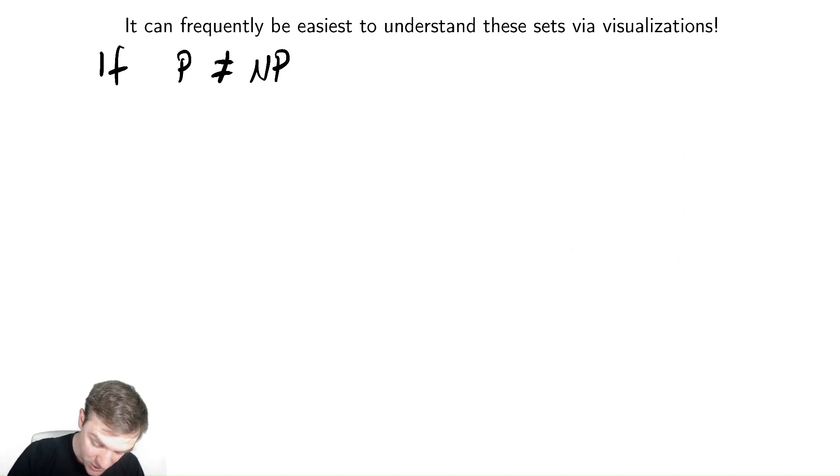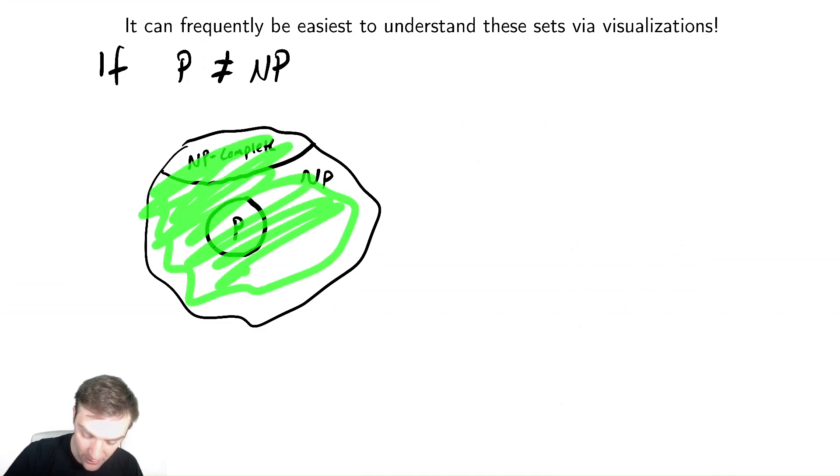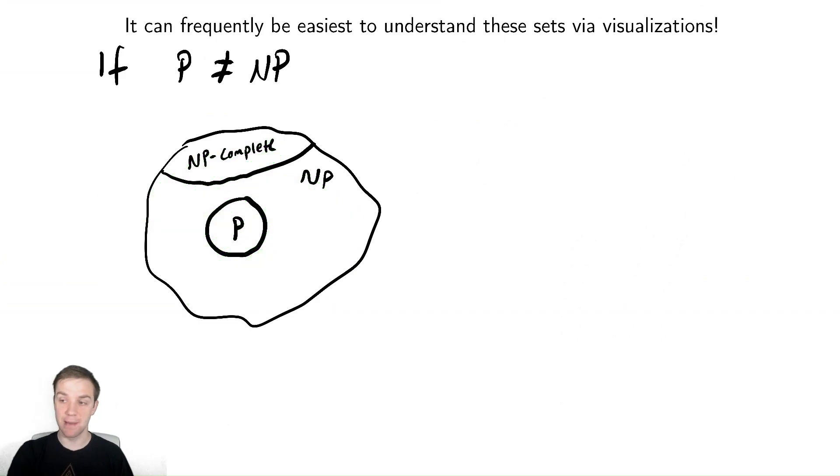The first one is going to be if P isn't equal to NP. In this picture I'm going to draw the set P. It's here. Then I'm going to draw the set NP. It's out here. And then somewhere outside of P but inside of NP are these problems that we call NP complete problems. And in a sense those are the hardest NP problems. Because every single problem in here, every single one in the entire area, can be reduced to the NP complete problem.